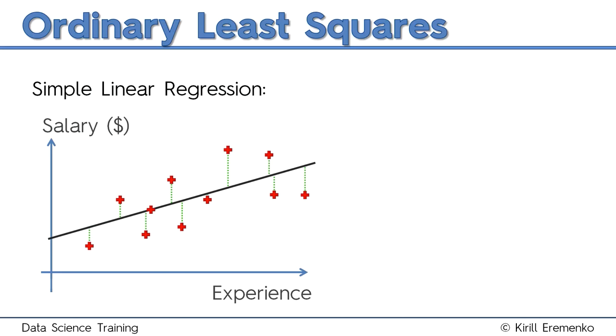Now let's draw some vertical lines from the actual observations to the model and look at one of these specific examples. You can see that the red cross is where that person is sitting in terms of salary. Let's say this person with 10 years of experience is earning a hundred thousand dollars.